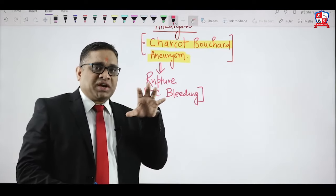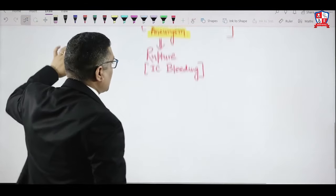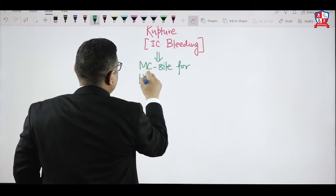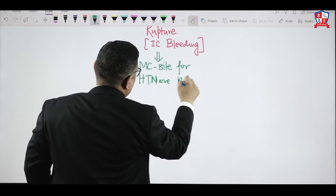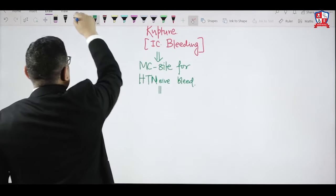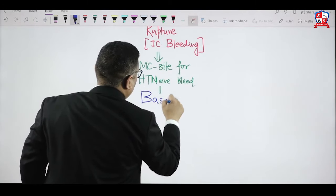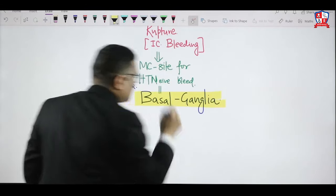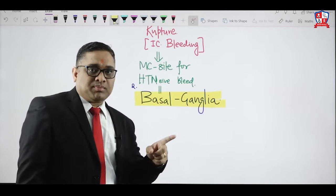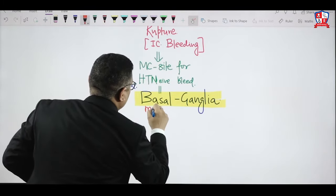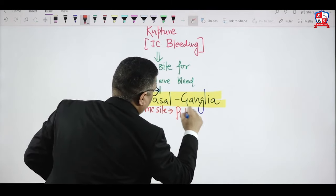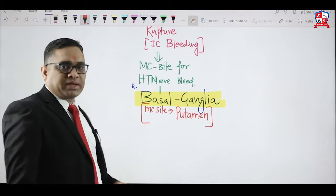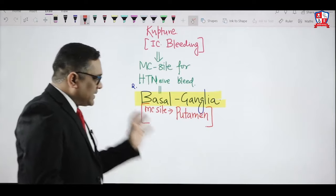What is the most common site for hypertensive bleed? This was an AIIMS question in 2015. The answer is basal ganglia. In older MCQs, examiners also asked which nucleus of the basal ganglia is most commonly affected — the answer is the putamen. So the putamen is the most common site for intracranial hemorrhage due to hypertensive bleed.